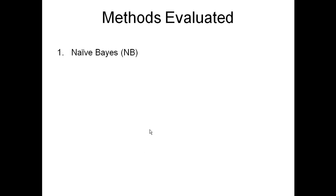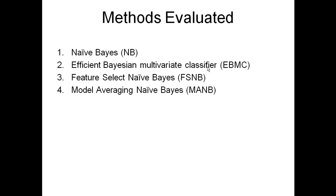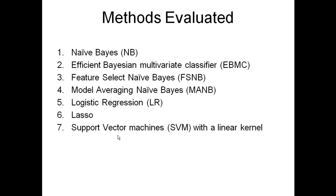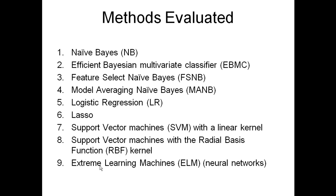The methods we evaluated were: naive Bayes, EBMC, feature-select naive Bayes, and model-averaging naive Bayes — these four are all Bayesian network-based methods with the target or disease at the root, EBMC being the most complicated. We also evaluated logistic regression, LASSO, support vector machines with a linear kernel, support vector machines with a radial basis function kernel, and a neural network-type program called extreme learning machines.